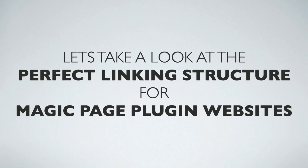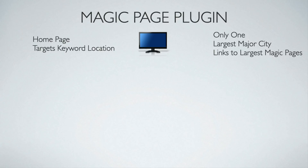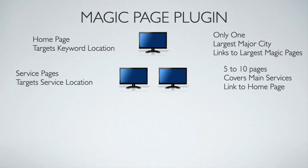Let's take a look at the perfect linking structure for Magic Page Plugin websites. Most of our followers — a couple of thousand people — use Magic Page Plugin websites, but if you use this for any type of website and follow this structure, it will make sense. The home page should target keyword plus location — so let's say you choose the largest major city, say London in the UK, or Miami, Florida. There's only one of them, and it links to the largest magic pages. If you've got 100 magic page locations set into your radius but three are almost as big as the home page, the home page will only link to those three.